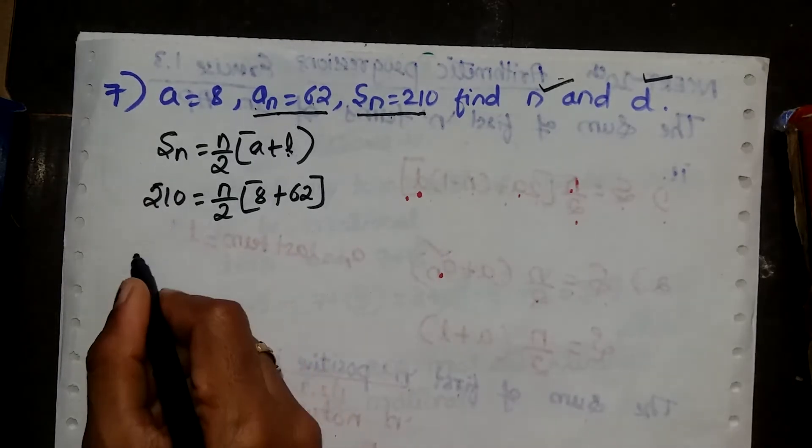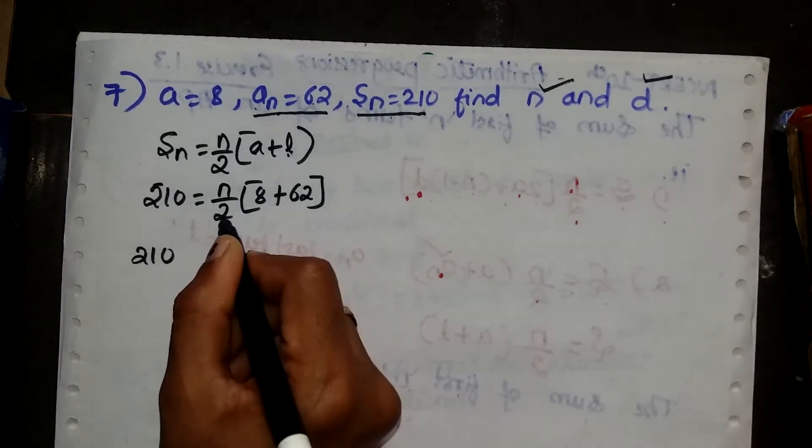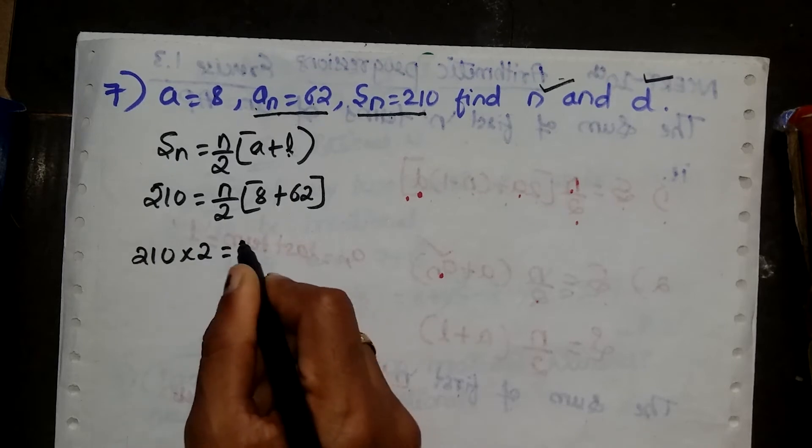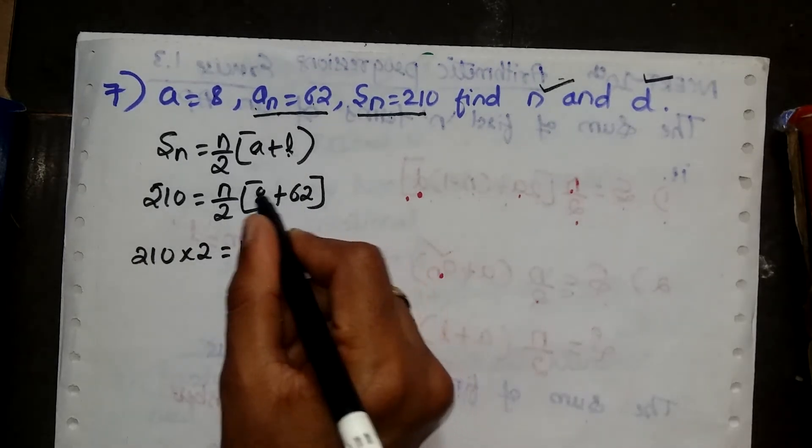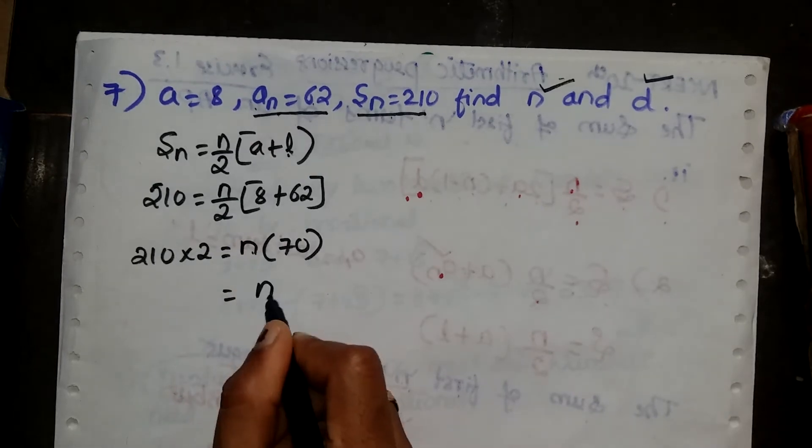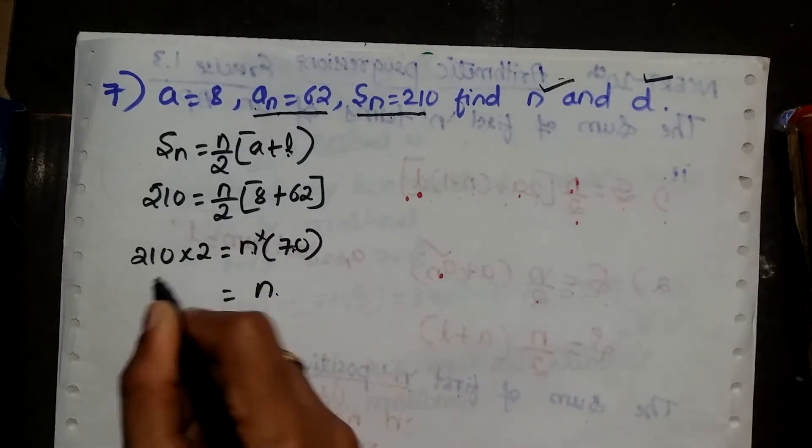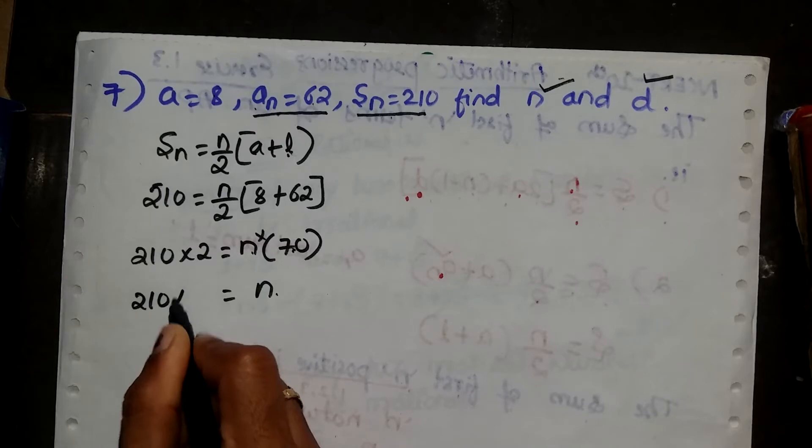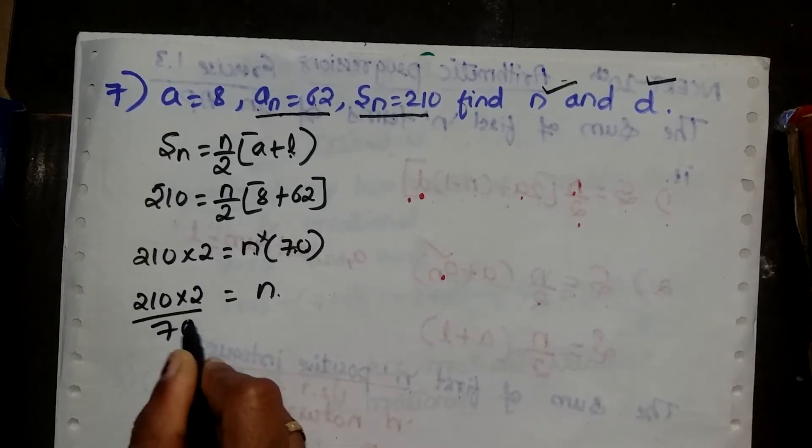So 210 divided by 2 becomes multiplied by 2, equals n into 70, since 62 plus 8 is 70. So n equals 210 times 2 divided by 70.